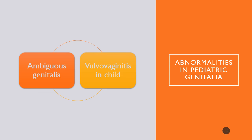Some children are born with ambiguous genitalia, where genetically they would be male or female but external genitalia were not fully developed in utero and it is difficult to determine the sex. It is also possible for children to develop vulvovaginitis, which could be from sexually transmitted infections especially in sexual assault cases, foreign bodies from self-exploration, or yeast infections in children with juvenile-onset diabetes. Wearing wet bathing suits is also a contributing factor.